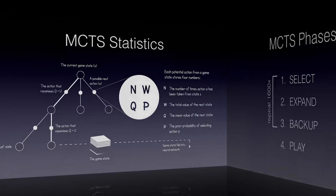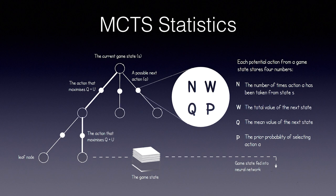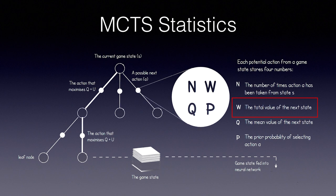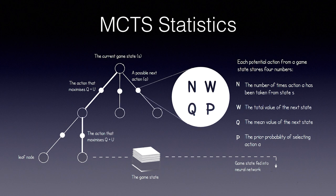There are four statistics that we will store for each action or edge. Note these are all functions of the state we are in and the action being considered. N represents the number of times action A has been explored from state S, incremented for each node in the path every time we perform a backup. W is the total value of the next state — every time we hit a leaf node, we query the neural network and look up the value of that state, then add the leaf node's value to W of each node on the path back to root. Q is the mean value of the next state, simply W divided by N — the same concept as in Q-learning. P is the prior probability of selecting action A, returned from the neural network policy head every time we hit a leaf node.